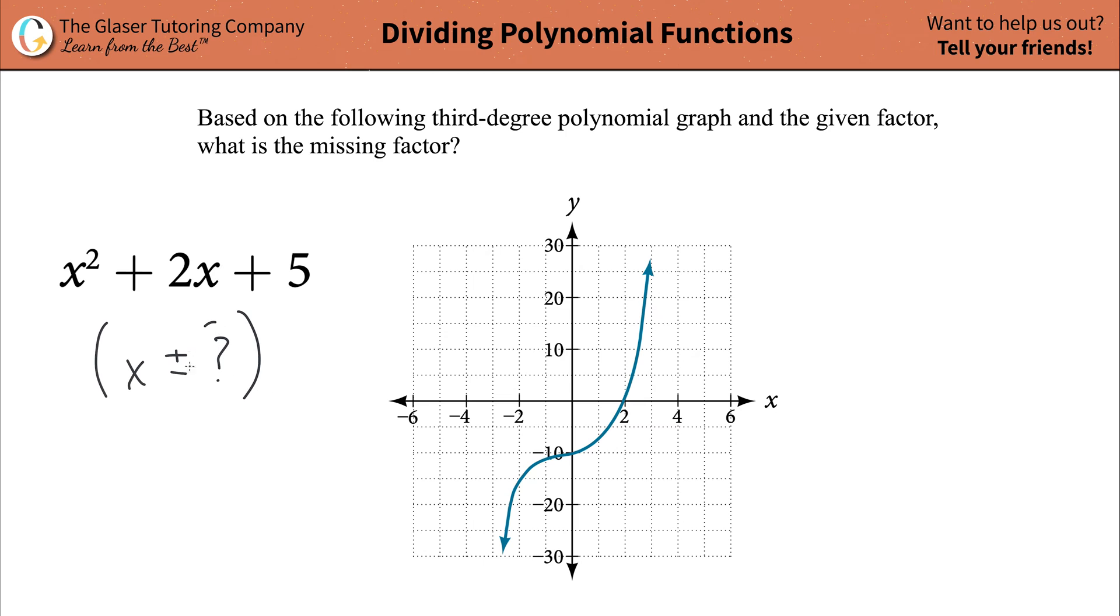Now the way we're going to figure out this missing number is by looking at the graph. Notice how the graph passes through the point. It looks like it's a little bit off from two, but I'm going to have to assume it's exactly two. Notice how it intersects the graph right there basically at x is equal to two. So write that down, x equals two.